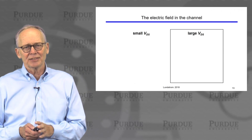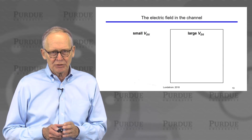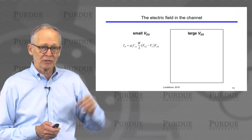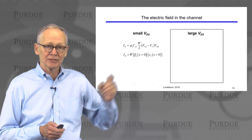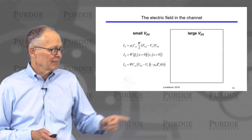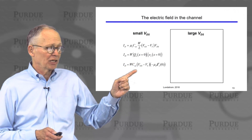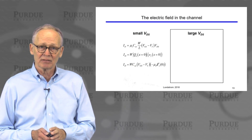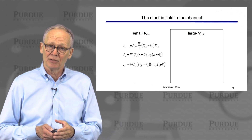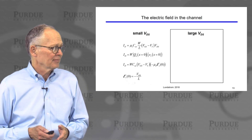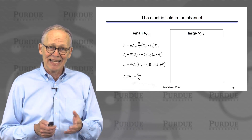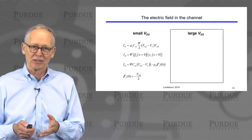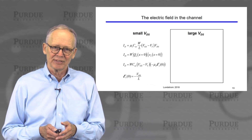It's also interesting to look at the electric field in the channel. Under small drain-to-source voltage, we have the linear region current expression. Current equals charge times velocity, where the charge is C_OX(V_G minus V_T) and the velocity is minus mobility times electric field. Putting these together and solving for the electric field at the source, we find that it's in the negative direction and equals the drain-to-source voltage divided by the channel length — exactly what we assumed in the previous lecture.